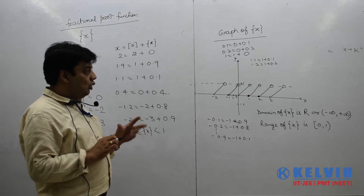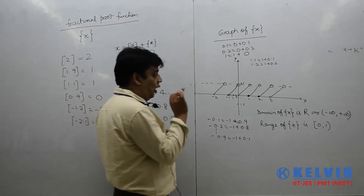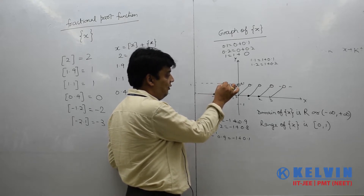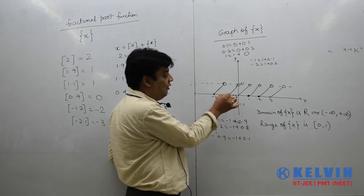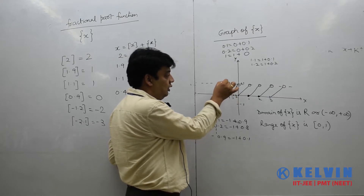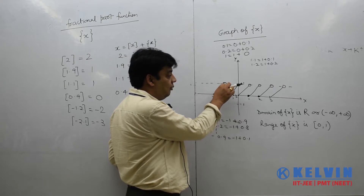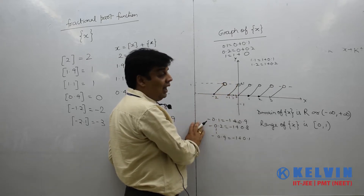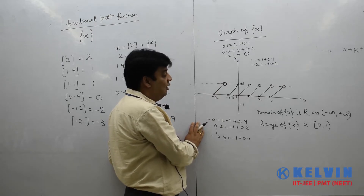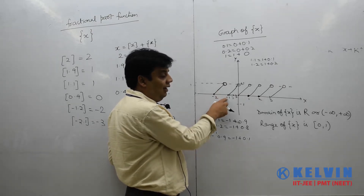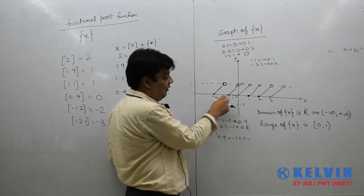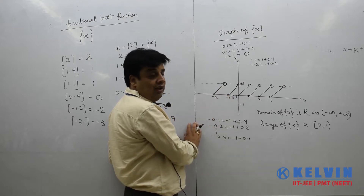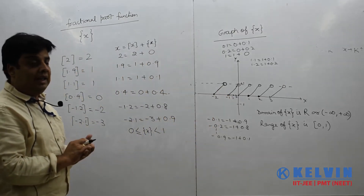Now let us also look at continuity. If we observe the graph, the marker is moving continuously but then we have to lift it at each integer point and place it at a new starting point. This means the graph is breaking at those points. So the function is discontinuous at integer values. At minus 1, for example, the left-hand limit is near 1 and the right-hand value is near 0, confirming it is a discontinuous function at integral points.